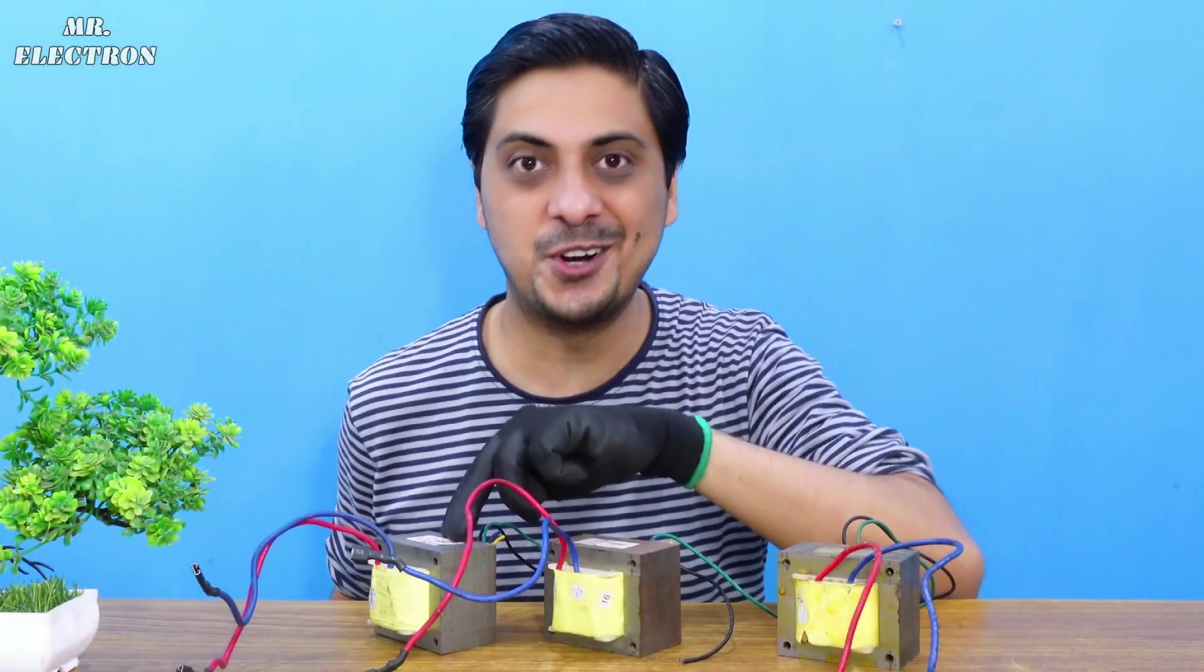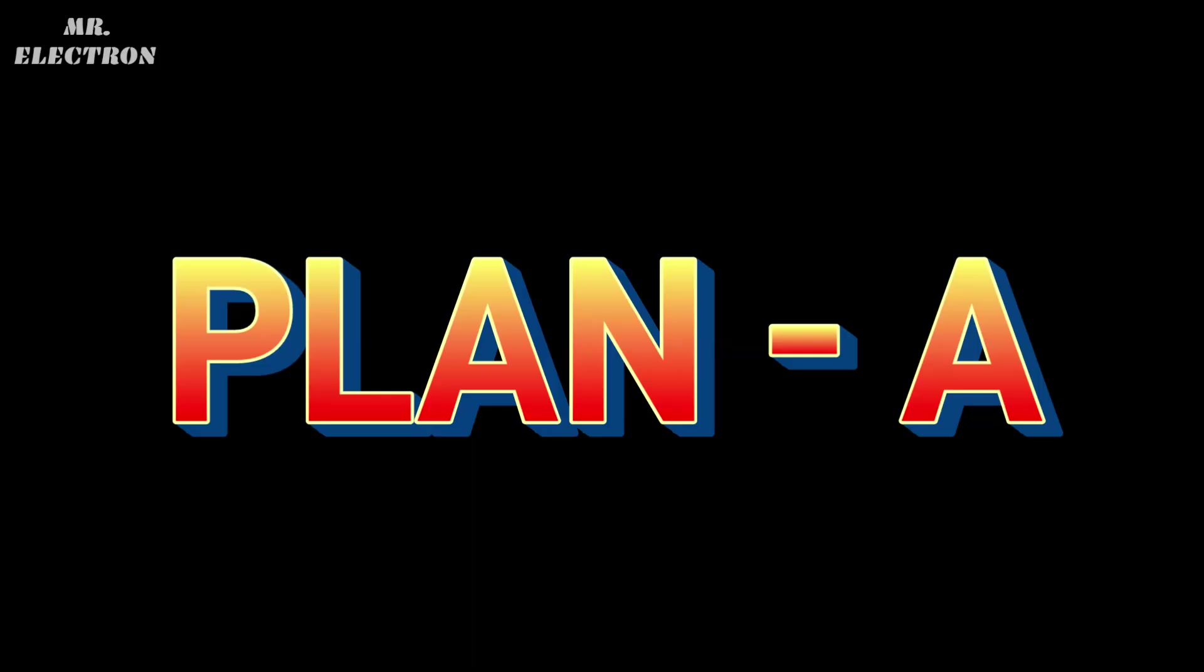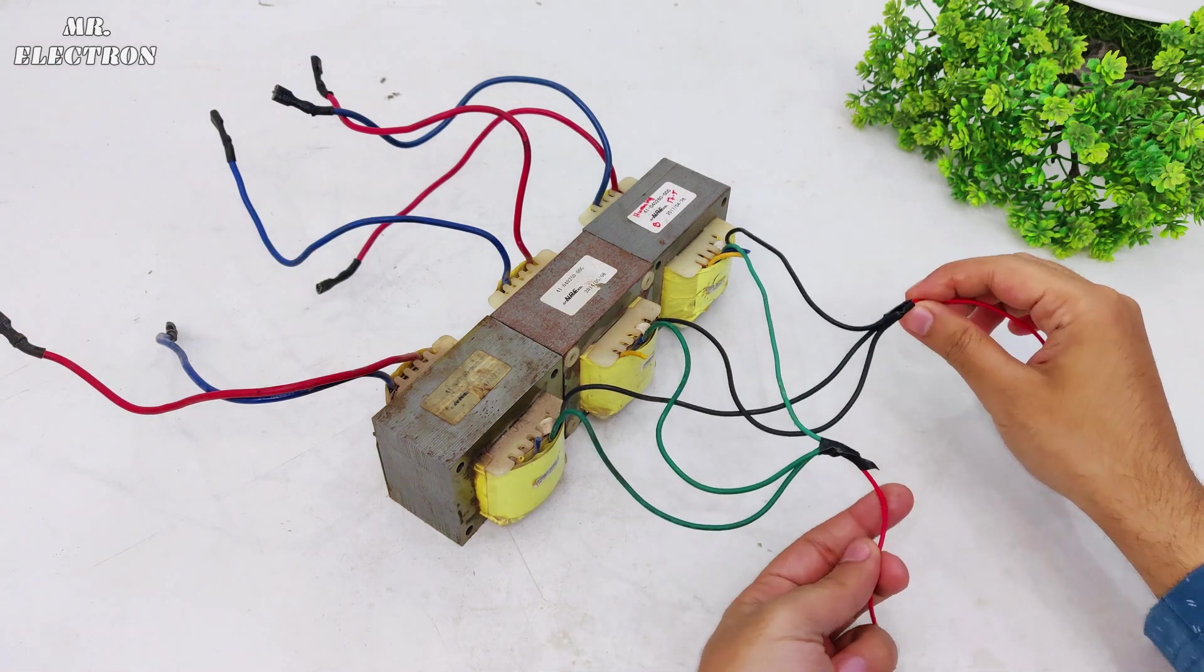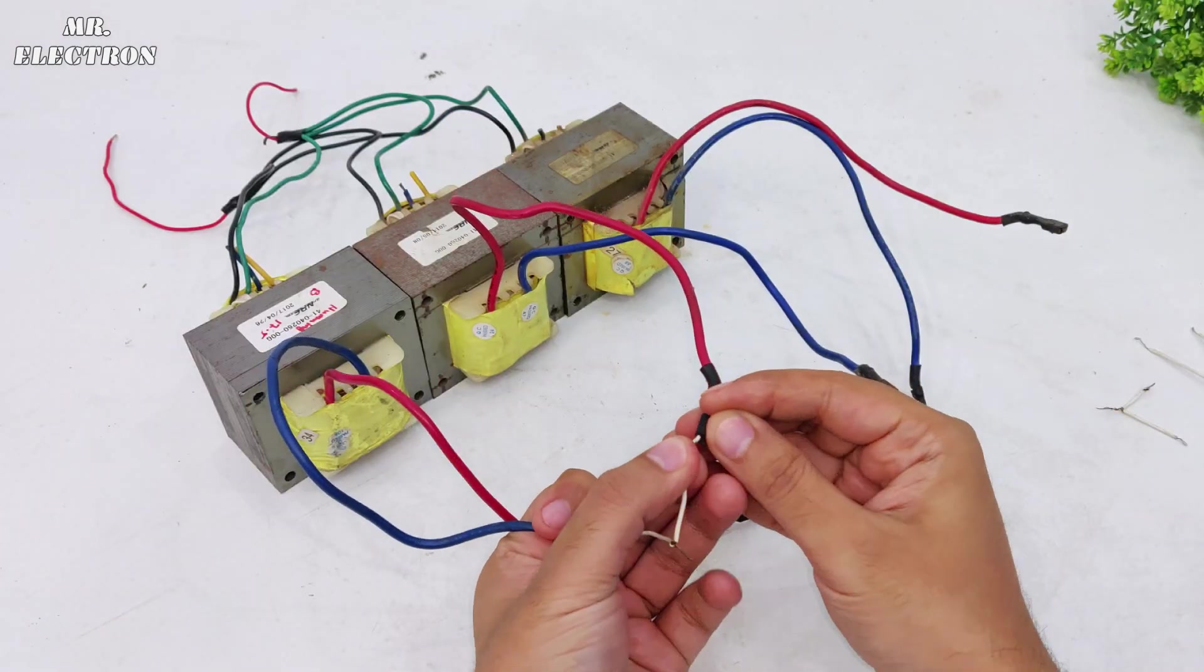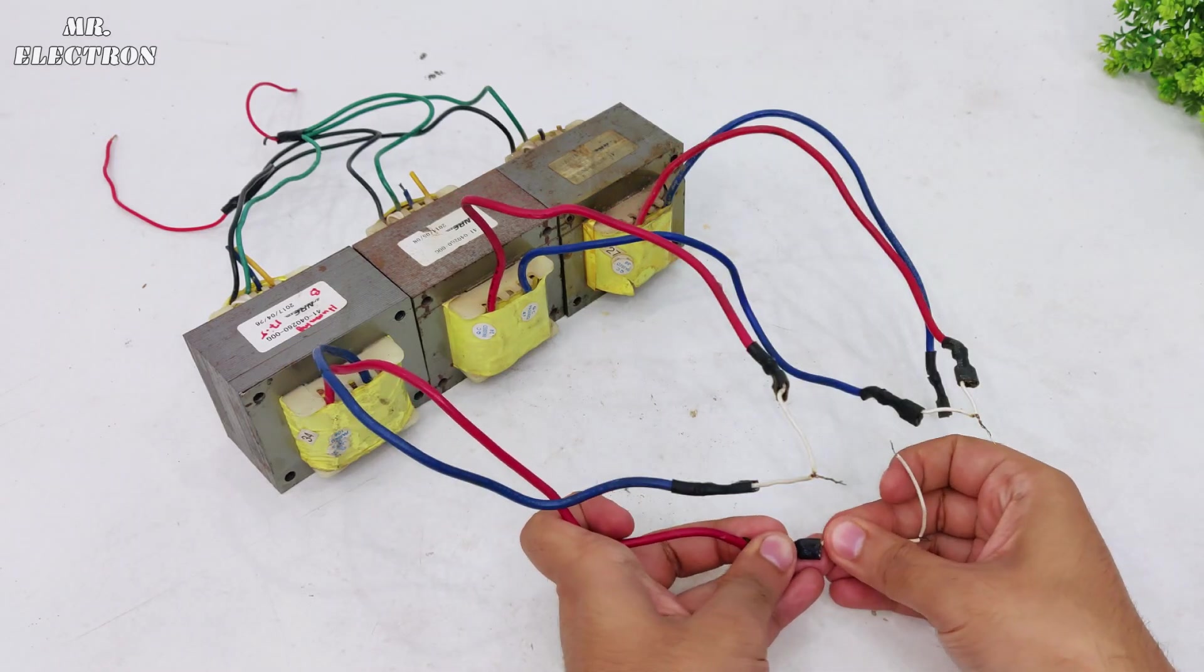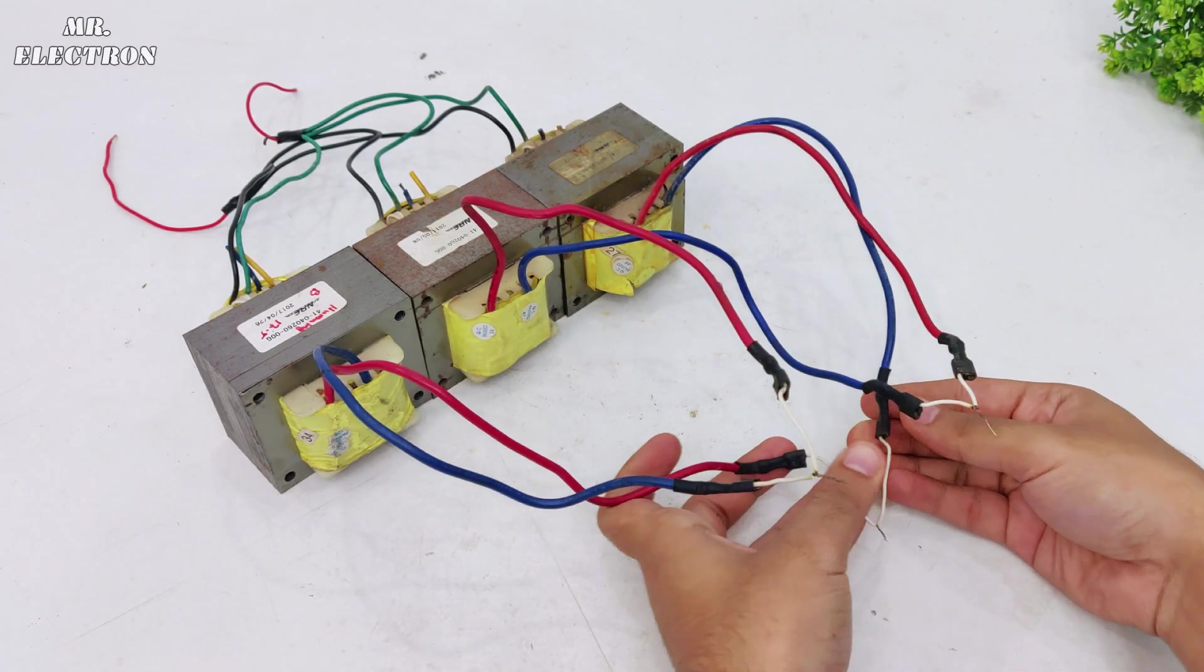Three transformers is all I need to run this brushless motor. For plan A, I've connected the primaries in parallel. For the secondaries, let's try delta connection. And we have three output wires representing the three-phase delta.